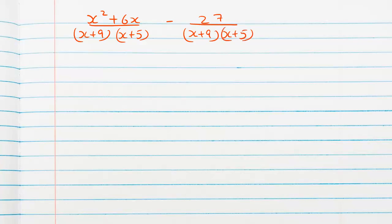We will write only the denominator first. We don't need to simplify them. And we will write the numerators only: x squared plus 6x minus 27.